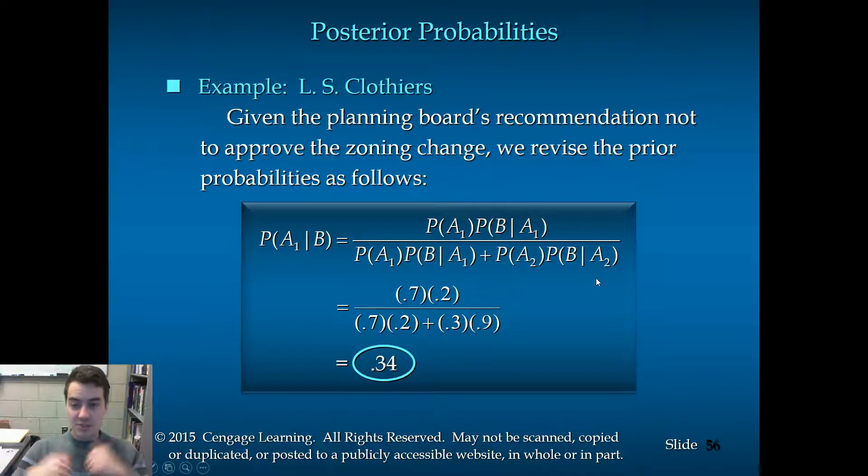So the only thing we have to change is we have to add in on the denominator, we have to add in the probability of A2 times the probability of B given A2. But we have calculated all these numbers already. So we can just take them straight from our previous slides and type them in. And the probability of A1 is 0.7. So that goes here and here. Probability of B given A1 are these two numbers, 0.2. Probability of A2 is 0.3. And probability of B given A2 is 0.9. So we just have 0.14 divided by 0.14 plus 0.27, which is 0.41. 0.14 divided by 0.41 is 0.34.